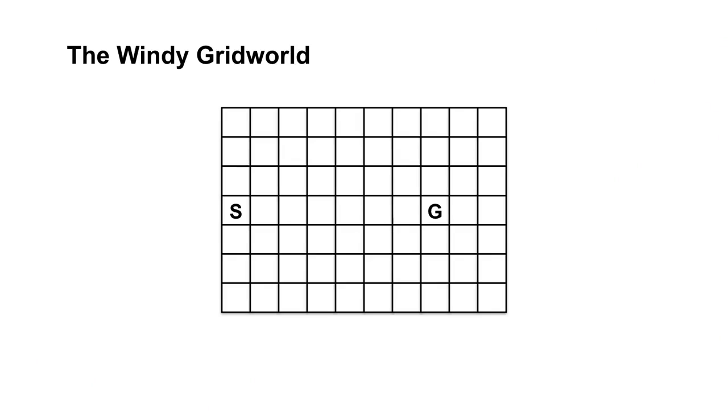The states form a grid with a single start state and a terminal state. The agent can move in the usual four directions. The agent receives a reward of minus one per step. This motivates the agent to escape as fast as possible. Since it's an episodic task, the discount factor gamma is one.